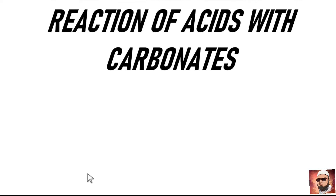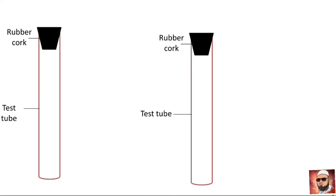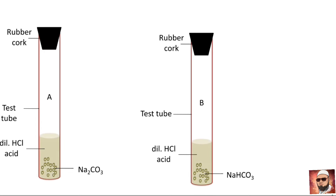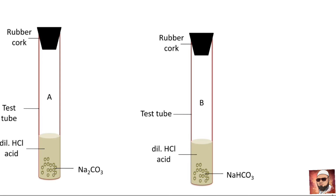Now let's look at the reaction of acids with carbonates and metal hydrogen carbonates. Take two test tubes and label them A and B. Take about 0.5 gram of sodium carbonate (Na₂CO₃) in test tube A and about 0.5 gram of sodium hydrogen carbonate (NaHCO₃) in test tube B. Add about 2 ml of dilute HCl to both test tubes. You will observe that some gases are evolved.